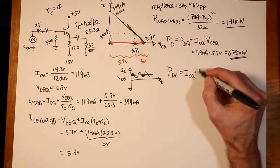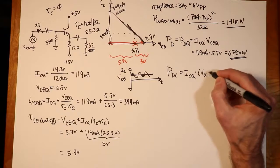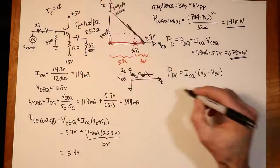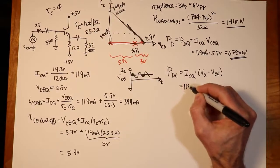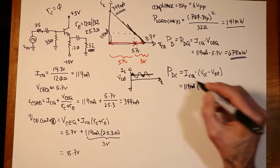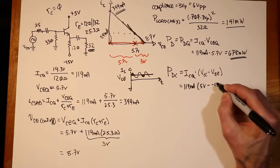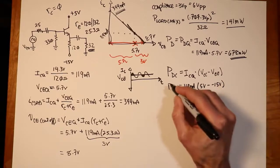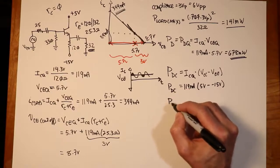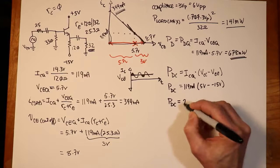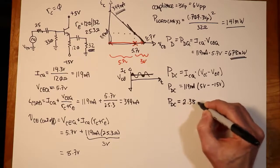Well, the total voltage here would be VCC minus the negative VEE. So we have 119 milliamps times 5 volts minus the negative 15 volts, which gives us a total of 20 volts. And our DC power winds up being a little over 2 watts, 2.38 watts.